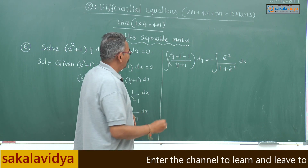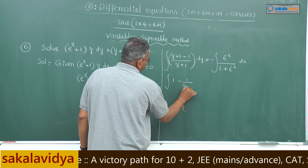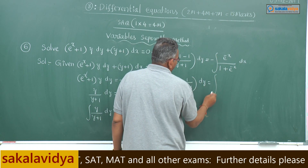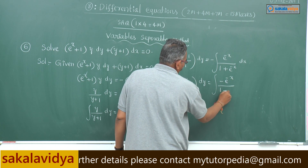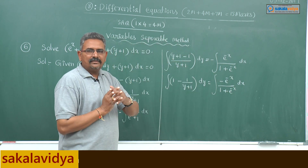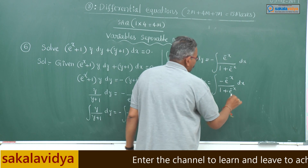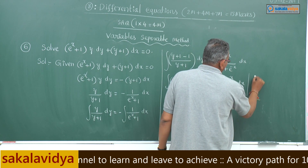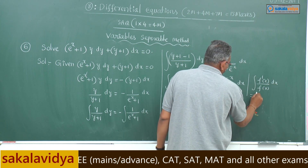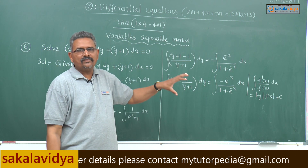Why should we write it like this? Because e^(minus x) is the derivative of 1 plus e^(minus x). So we wrote it that way. Now y plus 1 by y plus 1 is 1, so this becomes integral of (1 minus 1 by (y plus 1)) dy equals integral of minus e^(minus x) by (1 plus e^(minus x)) dx. We need to recall the general formula: integral of f'(x) by f(x) dx equals log|f(x)| plus C.